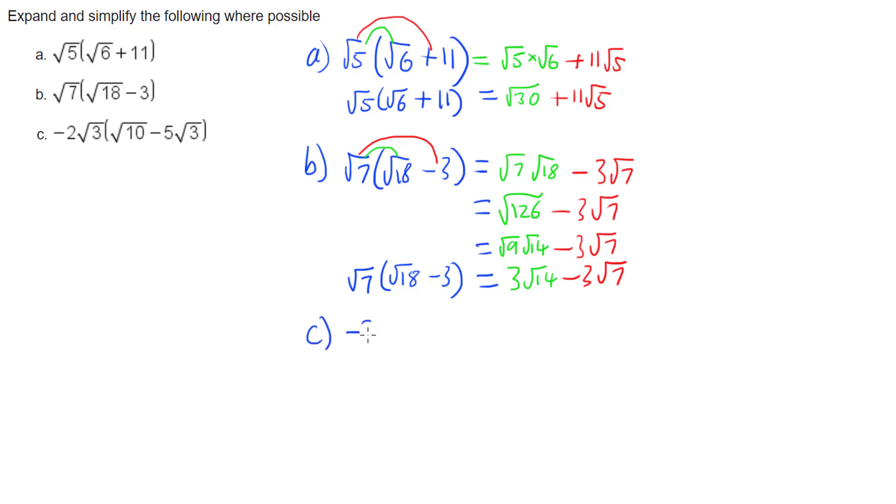And lastly, part c. I have minus 2 root 3 multiplied by root 10 minus 5 root 3.